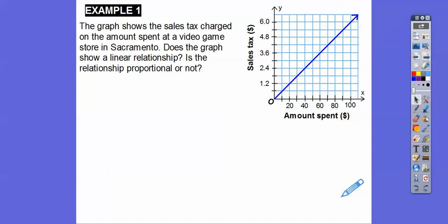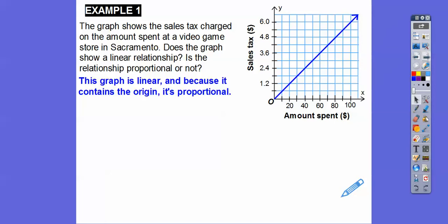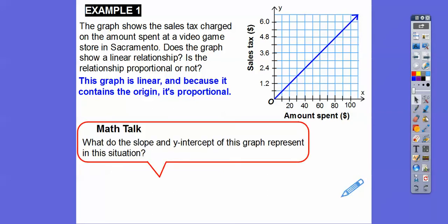Let's go ahead and go through this application. The graph shows the sales tax charge based on the amount spent at a video game store in Sacramento. Does the graph show a linear relationship? Is the relationship proportional or not? The graph is definitely linear because it's graphing a line, and because it's going through the origin, it's considered proportional. So what is the slope and y-intercept of this graph?